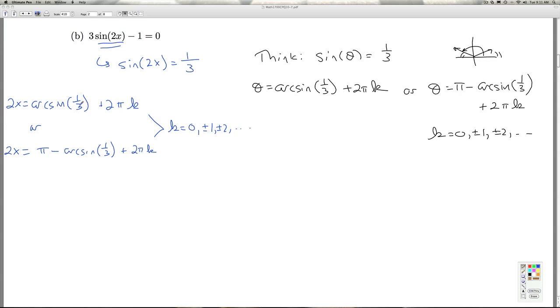All right, so that's that. And now, as before, I'm going to divide both sides by 2, multiply both sides by 1 half. And once again, when you multiply by 1 half, remember to make sure you multiply both terms over here by 1 half. So I get 1 half arc sine of 1 third plus 1 half of this gives you pi k. Or, pi over 2 minus 1 half arc sine of 1 third plus 1 half here gives you pi k.